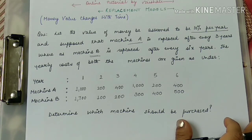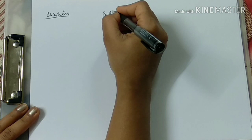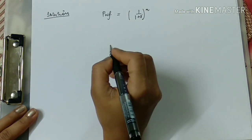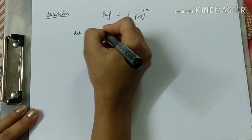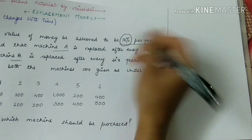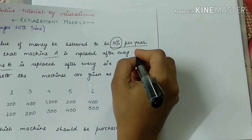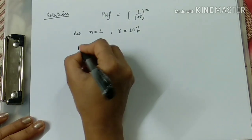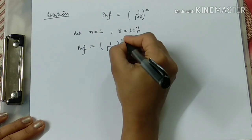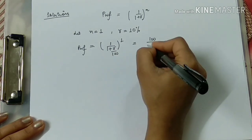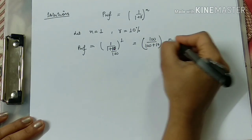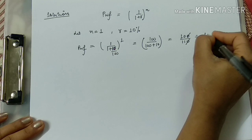Now I will tell you how to solve such questions. The present worth factor formula is PWF = 1 upon (1 + r) to the power n. Taking n = 1 year and rate of interest r = 10% per year, it becomes 1 upon (1 + 10/100) to the power 1, which equals 100 upon 110.